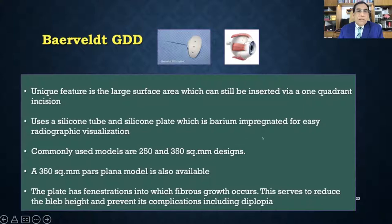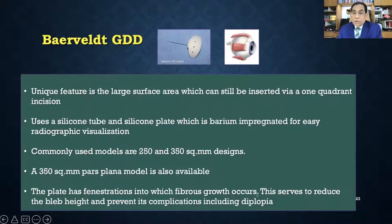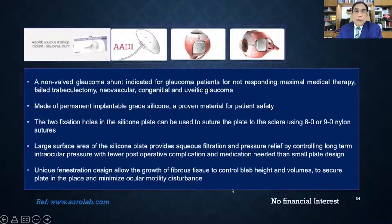The Baerveldt implant has a unique large surface area — 250 or 350 mm² — which can still be inserted through a single quadrant incision, mostly supratemporal. It uses a silicone tube and barium-impregnated silicone plate for radiographic visualization. The 350 mm² design is commonly preferred for better results. The plate has fenestrations for fibrous ingrowth, which reduces bleb height and prevents diplopia. The AADI is essentially a copy of the Baerveldt from AuroLab and provides similar results.